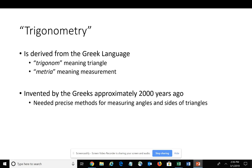Trigonometry is kind of a branch of algebra and geometry that was invented by the Greeks approximately 2,000 years ago because they needed some precise methods for measuring angles and sides of triangles.